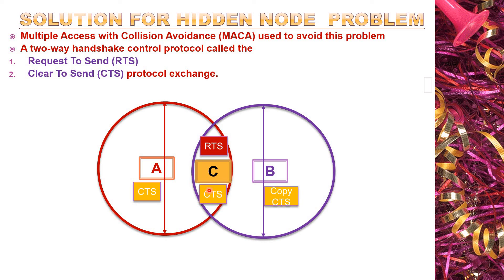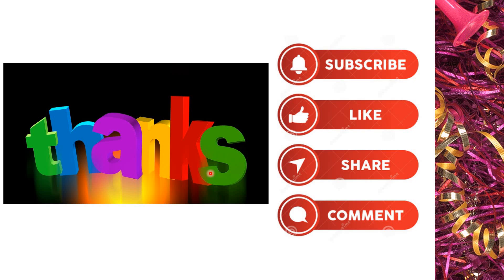During that entire period, B will not transmit any packet to C. By performing the handshaking operation between A and C, the collision is automatically avoided. This is called the MACA algorithm, or Multiple Access with Collision Avoidance — by using this protocol we are able to eliminate the hidden node problem. Thank you for watching this video; we will meet again with another video on ad hoc networks. Please like, subscribe, share, and comment.